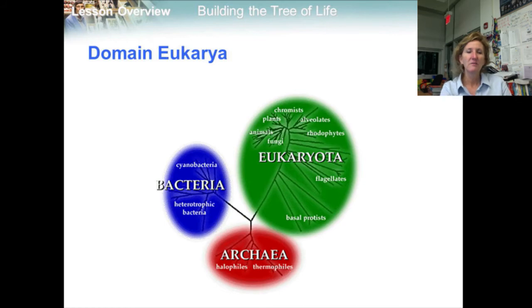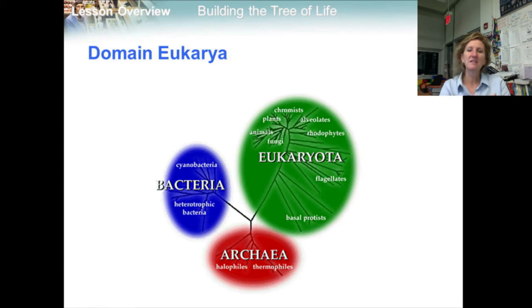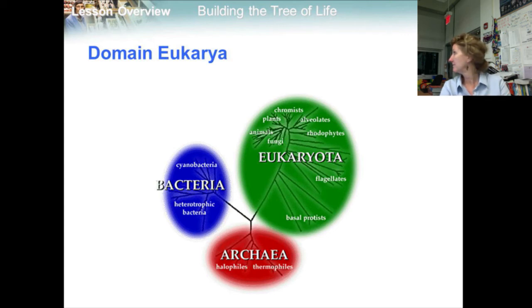The domain Eukarya consists of all organisms that have a nucleus. It comprises the four remaining kingdoms of the six-kingdom system: Protista, Fungi, Plantae, and Animalia.